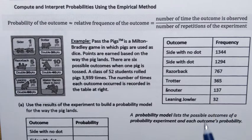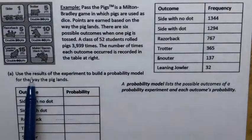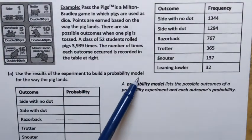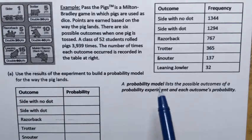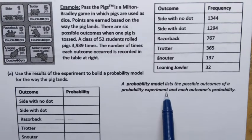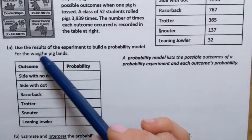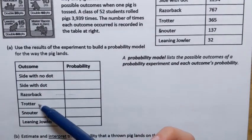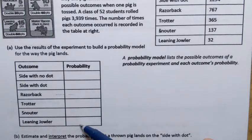Let's try to answer the first part of this question: use the results of the experiment to build a probability model for the way the pigs land. A probability model lists the possible outcomes of a probability experiment and each outcome's probability. Here we have a table for constructing the probability model — these are all six possible outcomes, the different positions in which a pig can land.